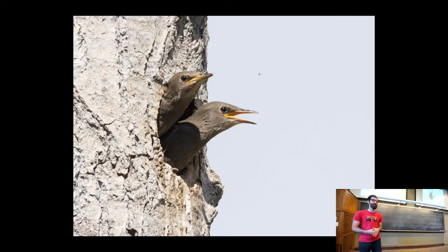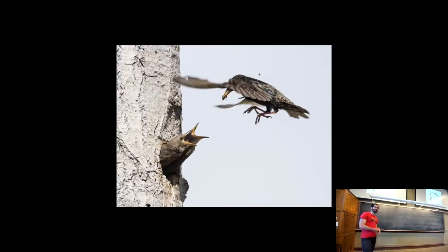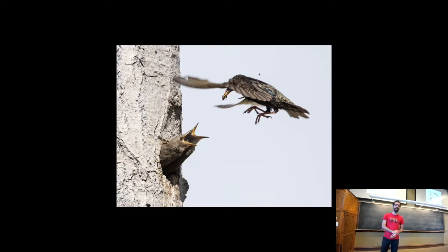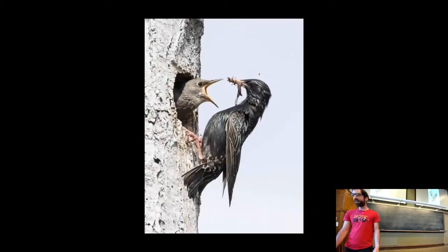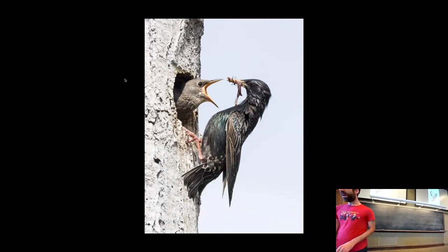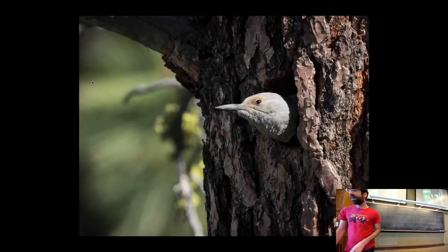Here we have a pair of baby starlings. They may look cute, but starlings are actually an invasive species in North America that take over the nests of native birds. So birders are not huge starling fans, but they nevertheless work hard to bring bugs and whatnot to the babies, back and forth, more and more food. This particular adult looks a little bedraggled — birds don't sweat, but it does look sweaty.